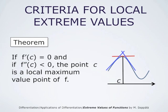If the function f has a second derivative, and if the second derivative at c is negative, then the point c is a local maximum value point of the function f. Of course, here we assume that f' at c is 0.